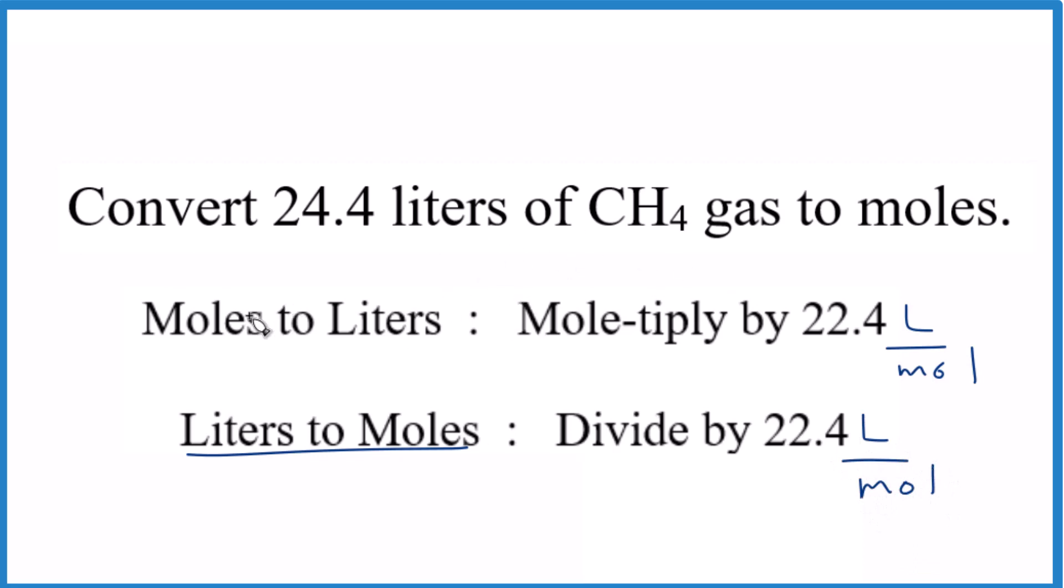And this is nice because when we go from moles to another unit, we do multiply. Moles to liters, it's by 22.4 liters per mole. When we go from moles to grams, multiply by the molar mass. Or when we go from moles to particles like molecules, we'll multiply by Avogadro's number. If we go the reverse, when we go to moles, then we'll divide.